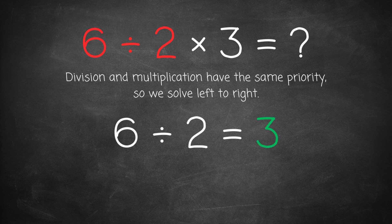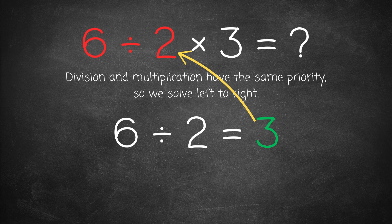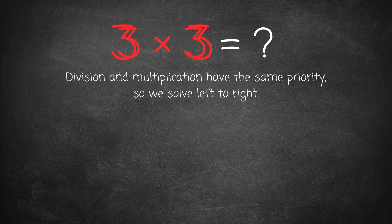First 6 divided by 2 equals 3. Making the equation 3 times 3. Now we multiply 3 by 3 which gives us 9.